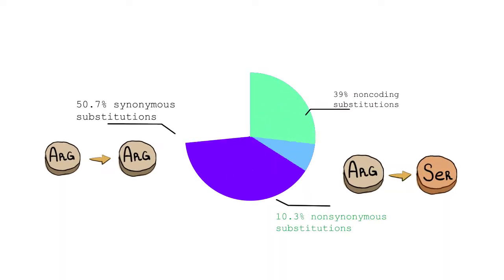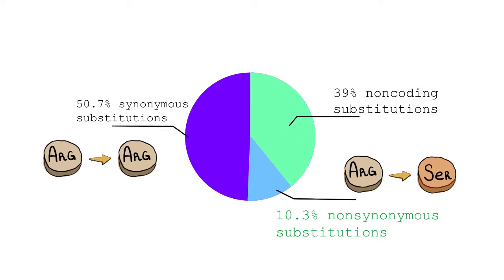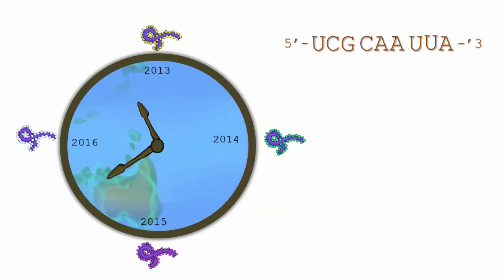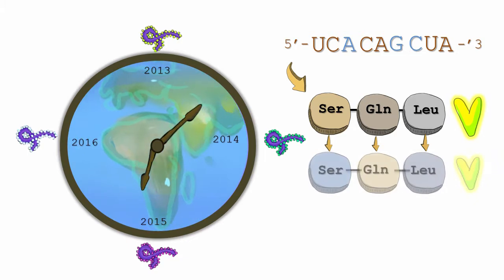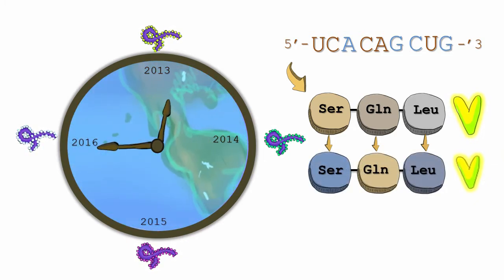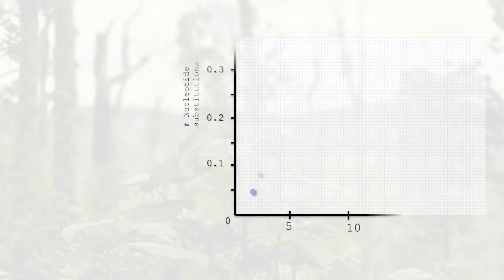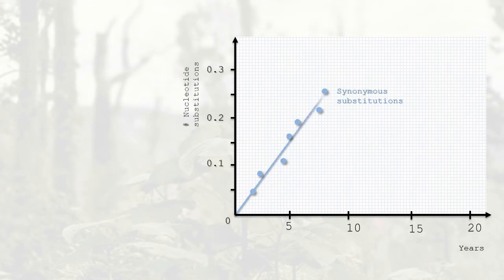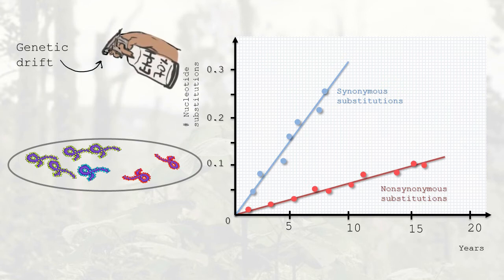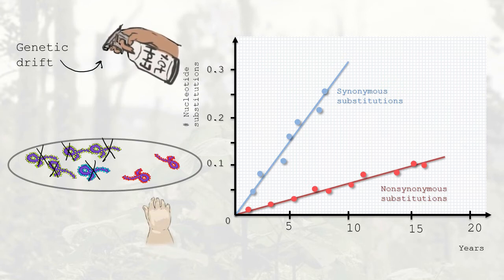The NGS identified that synonymous substitutions always predominated non-synonymous substitutions. This result is supported by the idea of the molecular clock and the neutral theory of molecular evolution proposed by biologist Motoo Kimura. Dr. Kimura found most nucleotide substitutions to be neutral, not affecting viral evolution, and that these substitutions change in frequency randomly through genetic drift or genetic hitchhiking, while appearing at roughly the same rate in all genes.